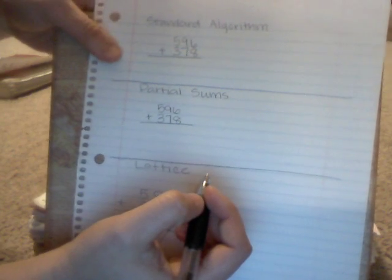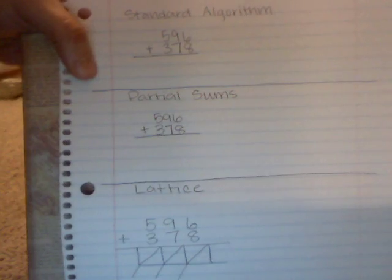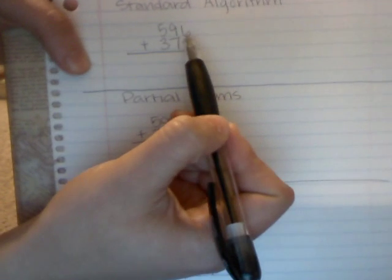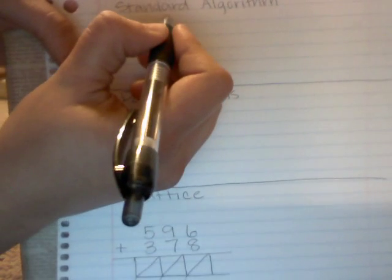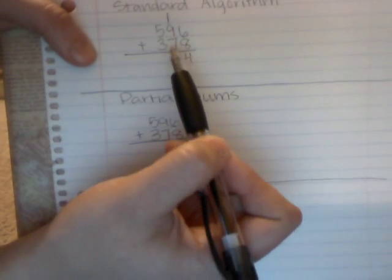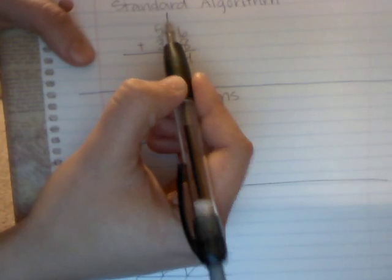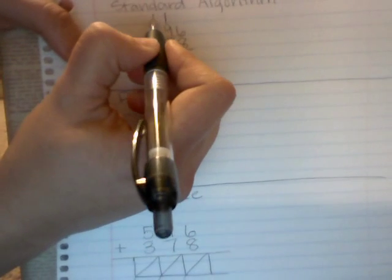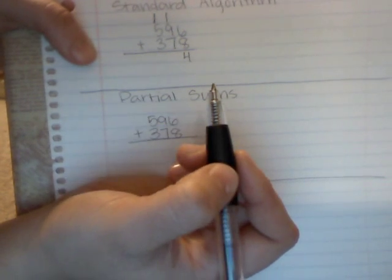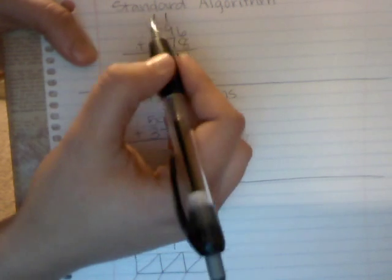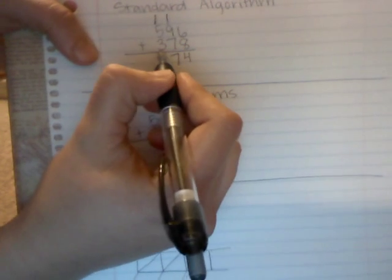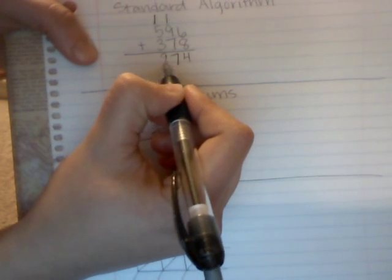First, we're going to start with the standard algorithm for a simple addition problem: 596 plus 378. Starting with the ones column, add 6 plus 8, which equals 14. Take the 1 to the tens place and put the 4 in the ones place. Then add the tens together, so that's 10 plus 7 which is 17, so you're going to take that 1 as 100 and then 7 tens. Then add all the hundreds place together, that's 6 plus 3 which is 9, so your answer is going to be 974.